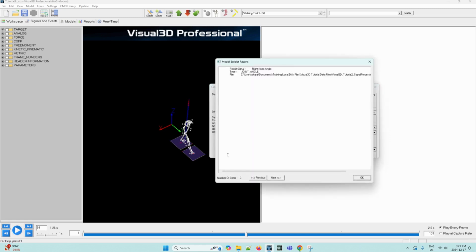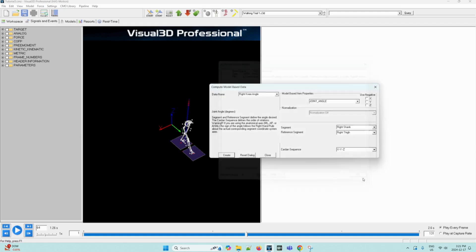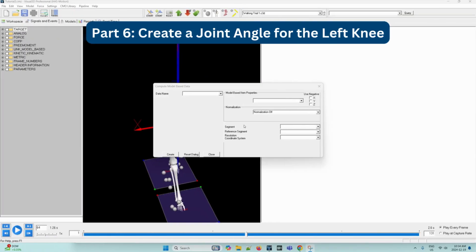The joint angle is created and a processing dialog shows if any errors were encountered. This dialog also contains which files were processed, which is important to note because signals are only created for active files. Now we can press OK.